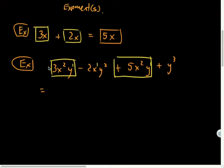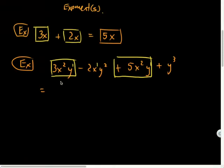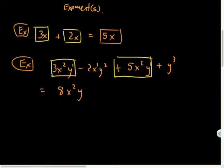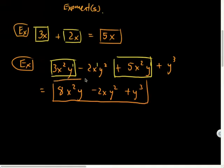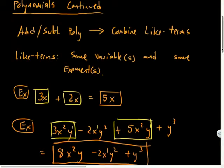Do you guys see any like terms? 3x²y and 5x²y. Even though this middle term has the same variables x and y, the exponents are not matching. So let's figure out 3x²y plus 5x²y. What am I going to do with the exponents? Leave them. What do I do with the 3 and the 5? Add them. So 3 plus 5 is 8x²y. Then I'll have minus 2xy² and plus y³.